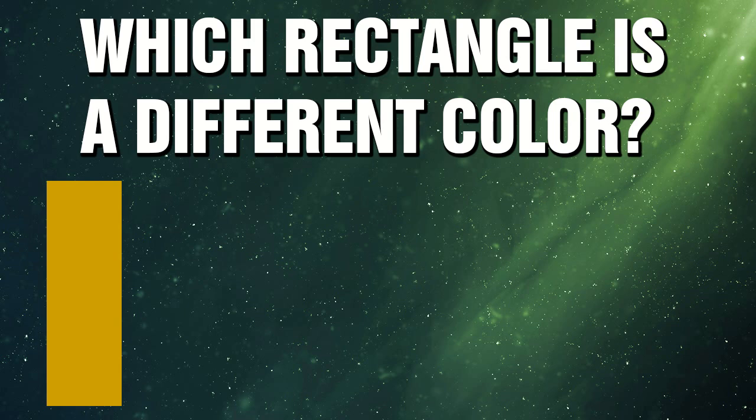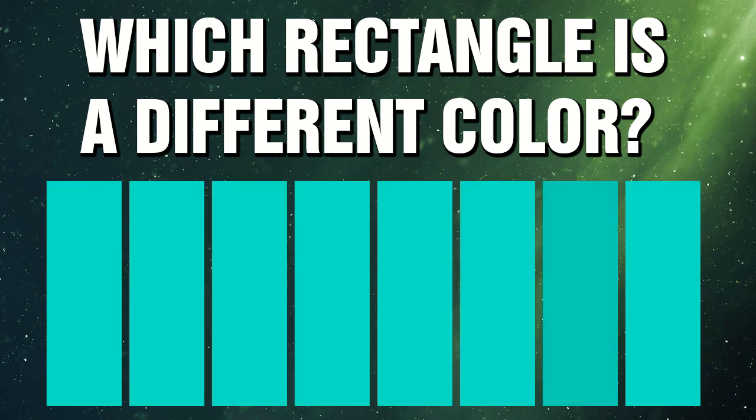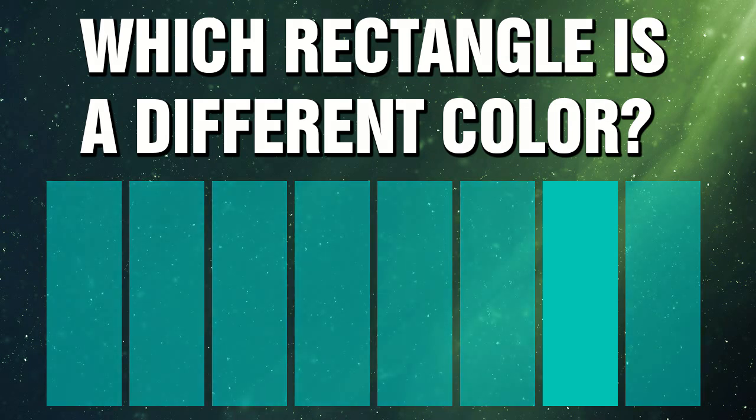Now it's only going to get more harder at this point. So let's try the next group. So this is the color aqua. So have a look at all the rectangles. One of them is a different shade. Look very closely now. Which one is different? Are you ready? It's this one right here.